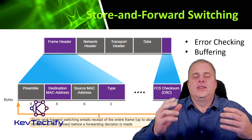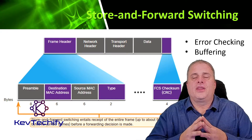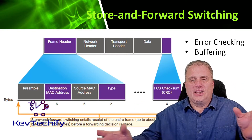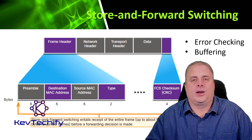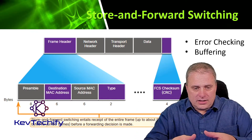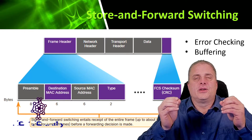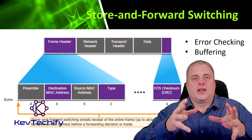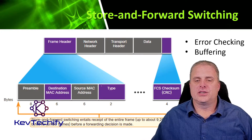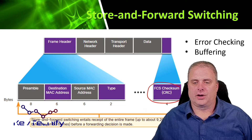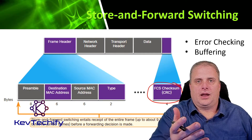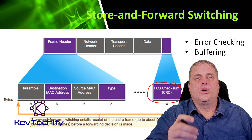In the store and forward method, this is where we do error checking. What it does is it gets the entire frame in — from beginning all the way through the end — and stores all of that in RAM. When it has the entire frame in RAM, it calculates the cyclic redundancy check. That's a process where we run the data through an algorithm and get a number, then compare that number to the frame check sequence checksum field. If these two numbers match, the data hasn't been changed or manipulated — we know it is good data.